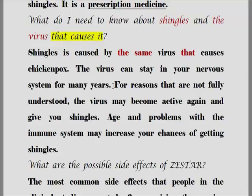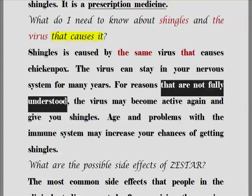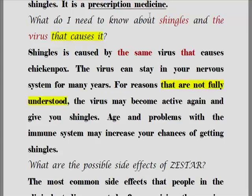For reasons that are not fully understood, the virus may become active again and give you shingles. 아직은 완전히 이해되지 않은 어떤 이유들 때문에 그 바이러스가 active, 즉 활성화됩니다. 그 바이러스들이 다시 활성화되어서 당신에게 대상포진을 일으키게 할 수도 있습니다.